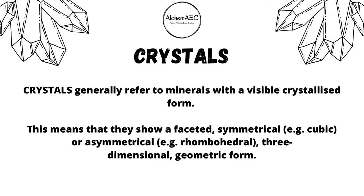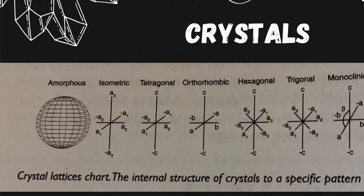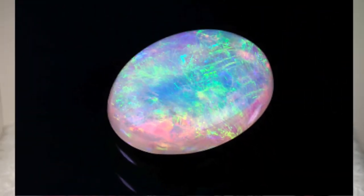Now there's crystals. Crystals generally refer to minerals with a visible crystallized form, meaning they show a faceted, symmetrical, three-dimensional, geometric form. The following seven Bravais lattice systems, named after Auguste Bravais, form the basic structure of all crystals: isometric, tetragonal, orthorhombic, hexagonal, trigonal, monoclinic, and triclinic. There is also an amorphous lattice in which the crystal holds no particular shape or distinguished form — an opal is an example of an amorphous lattice. There's a lot of science that goes behind crystals, but that's just a brief summary.